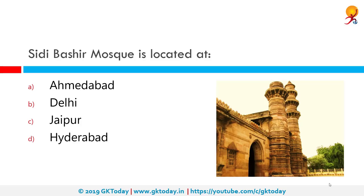Sidi Bashir Mosque is located where? It is located in Ahmedabad. The mosque is also called Jhulta Minar or Shaking Minarets.